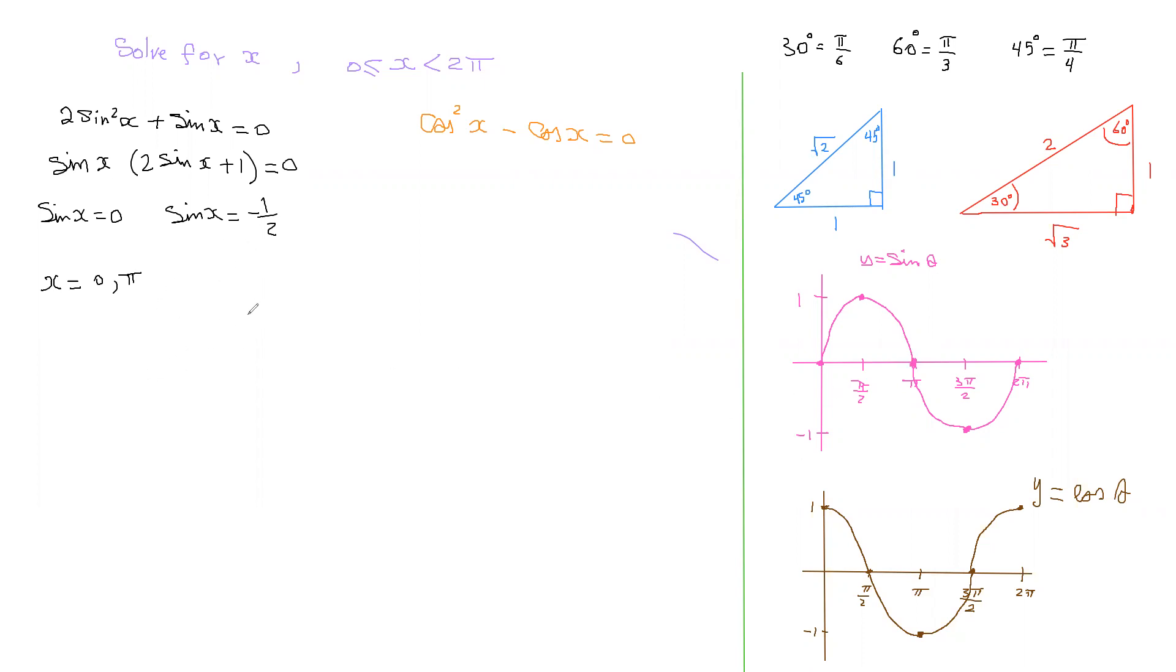For sine x equals negative half, you have to have a different approach. Draw your quadrants. All students take calculus. Usually I write zero, 180, and 360. I don't write the 90 degrees and the 270 degrees. The reason is when I'm finding angles, I only need the zero, 180, 360, because I'll show you why.